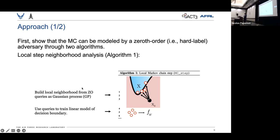So what we do is we borrow a page from interpretability literature, and we say at each local step in the hard-label attack, we're going to use the hard-label queries as points in a local neighborhood around that sample, and we'll use that neighborhood to build a linear model of the decision boundary in that neighborhood.